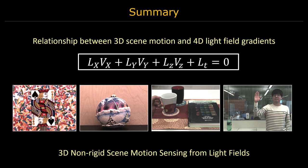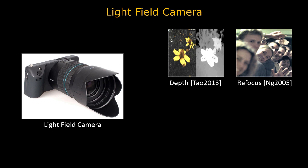Light field cameras have long been studied for depth sensing and image refocusing. This paper takes the first steps towards positioning light field cameras as effective motion sensors, in addition to their depth estimation capabilities.